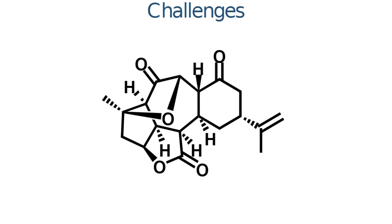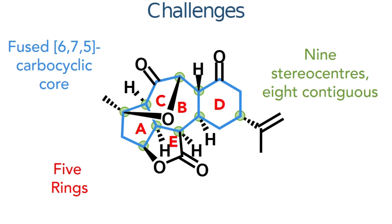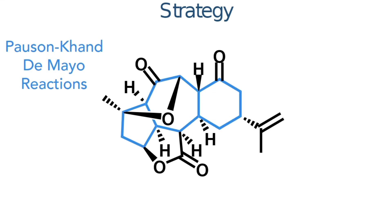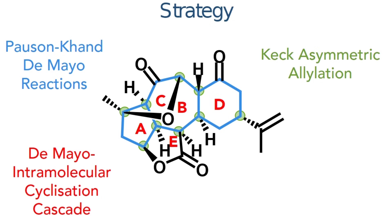Some of the challenges associated with synthesising this molecule are the fused 6-7-5 carbocyclic core, which is part of a network of five fused rings. Embedded within this ring system are nine stereocenters, eight of which are contiguous. The strategy that these researchers would use to construct this molecule involves using Pauson-Khand and de Mayo reactions to build up the carbocyclic core, while the de Mayo reaction could also trigger an intramolecular cyclisation cascade to form the two other rings. The stereocontrol in the synthesis would arise from the use of a Keck asymmetric allylation early in the synthesis, using this stereochemistry to template all further reactions.